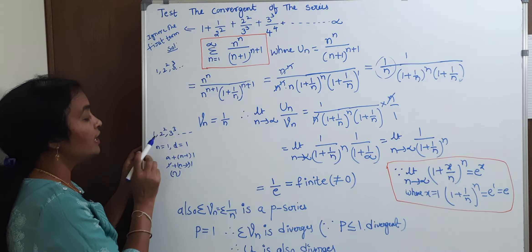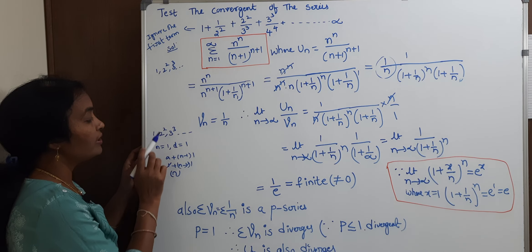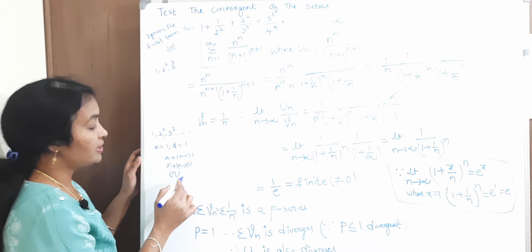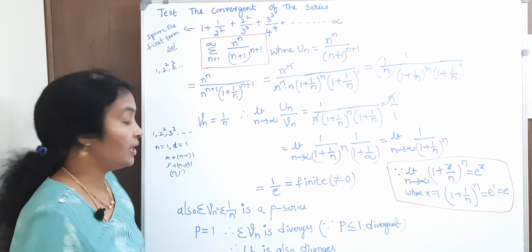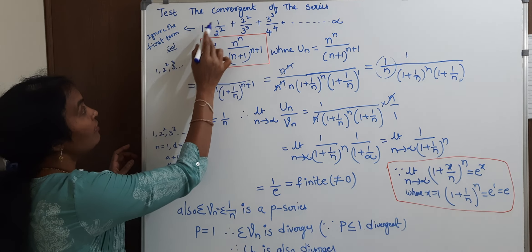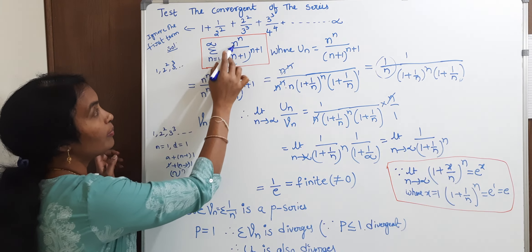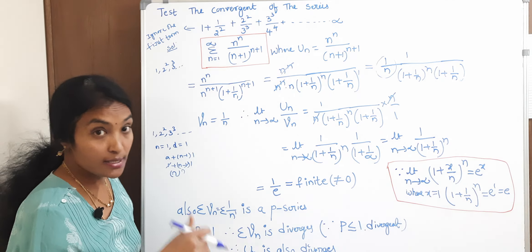N to us the same thing. If you take N equal to 2, the power is 2. If you take N equal to 3, the power is 3. And N power N. If you take N equal to 1, the power is 1. Okay? And N power 1, N to us the same thing. Is it clear?